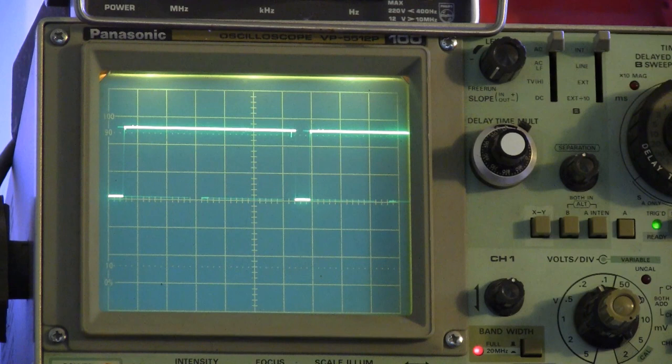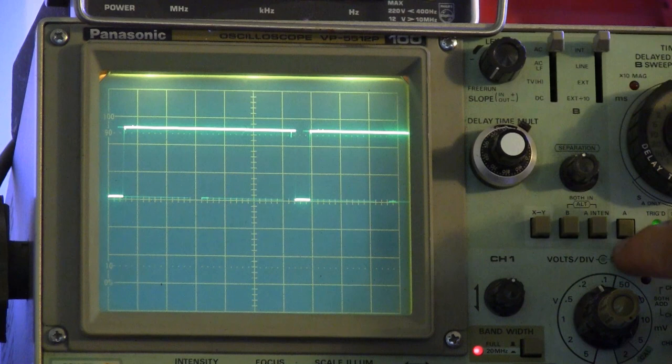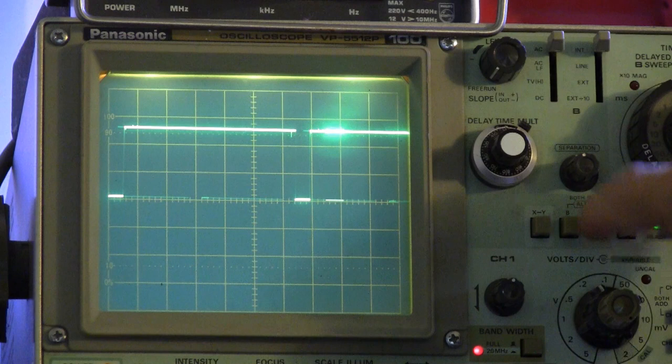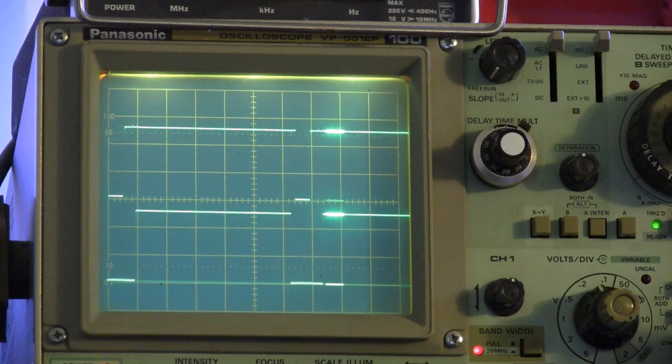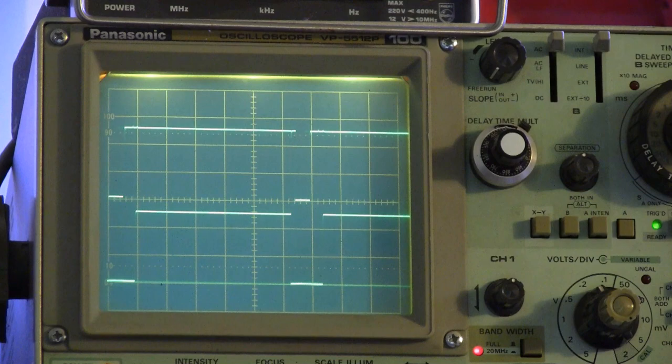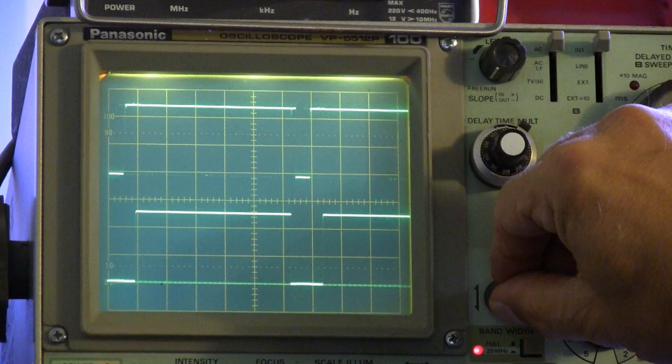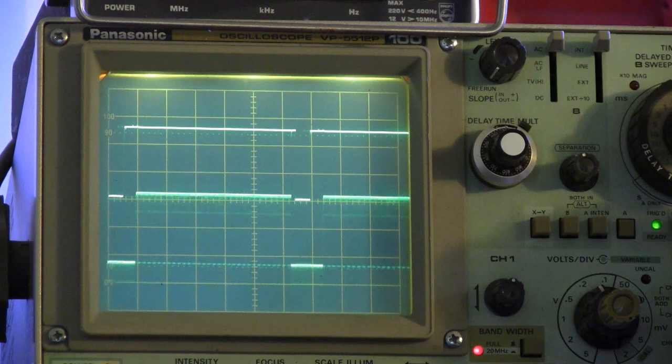So now we're looking at horizontal sync. Now we'll go to delayed sweep again, and we will also go to chop. All right. Now we're chopping back and forth between our two signals, our blanking and our sync. Sync is here and blanking is here.